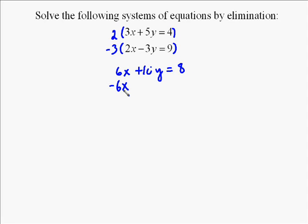And then also a negative 3 times 2 is a negative 6x. And then we're going to have a negative 3 times a negative 3y, and we're going to get a positive 9y, so a sign change there. And then a negative 3 times 9 is a negative 27.